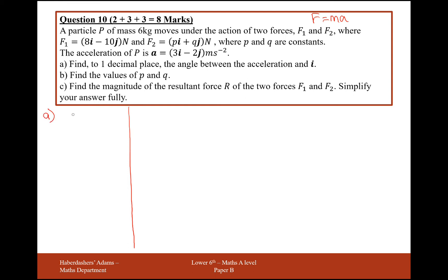So for part A we want the angle between the acceleration, that's this vector here, and I. So just drawing a little quick diagram out, it's 3 to the right, 2 down. So we want this angle here. This is our I vector. This is 3I minus 2J.